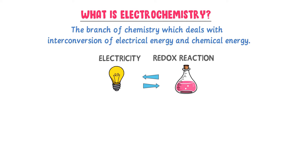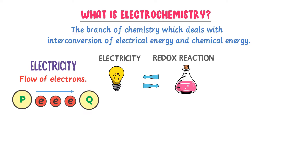You should also learn what is electricity. The flow of electrons is called electricity. For example, when electrons flow between two points, P and Q, we say that electricity is generated.